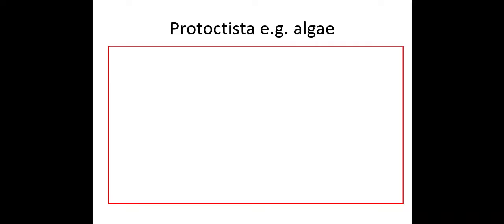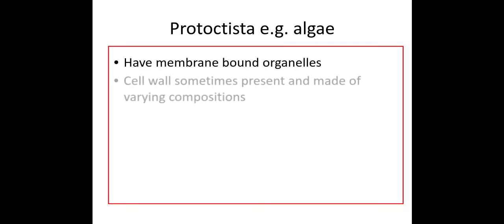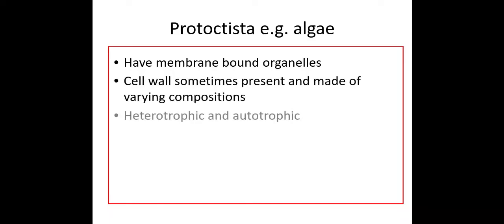Protoctista — for example, algae — these have membrane-bound organelles, so they are eukaryotes. They do have a cell wall, but you don't need to know what it's made of because it varies in composition. They can be heterotrophic or autotrophic, and can be unicellular or multicellular.